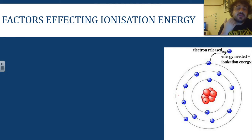And here's a diagram, so basically, the ionization energy is the energy needed for this electron to be released, to fly off. So, there's several factors affecting it.